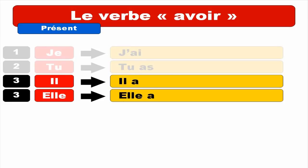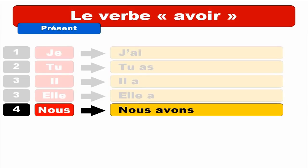Feminine form — ELLE A. Repeat. ELLE A. Then comes the form for NOUS — NOUS AVONS. You can notice there is a small link between this S and A — that's what we call la liaison. You get to put this small link, like Z. NOUS AVONS. Repeat. NOUS AVONS.